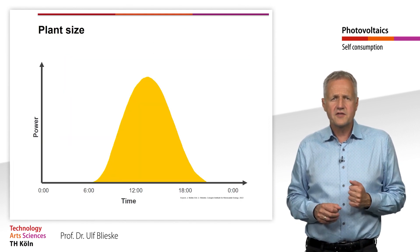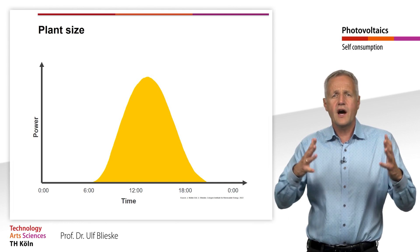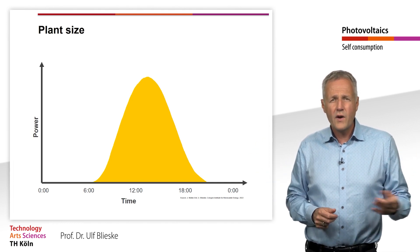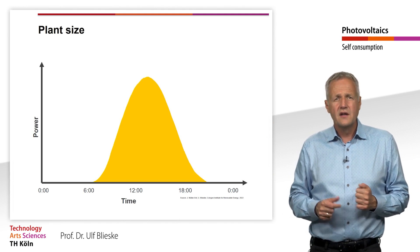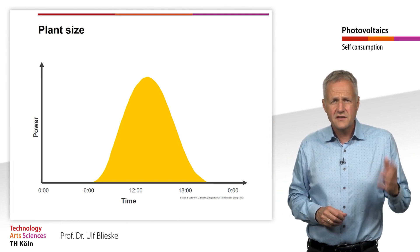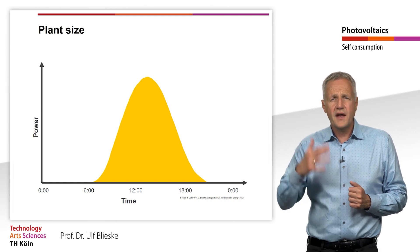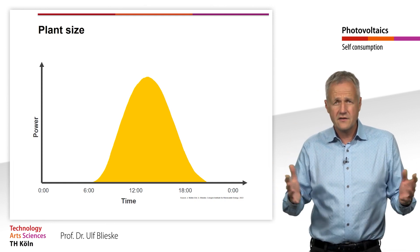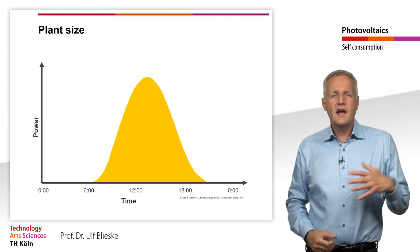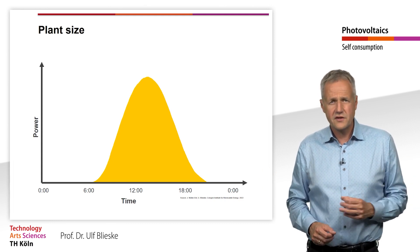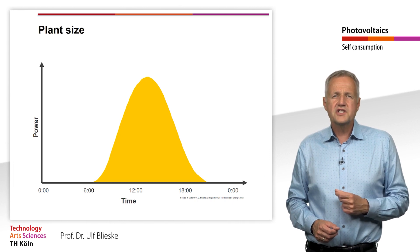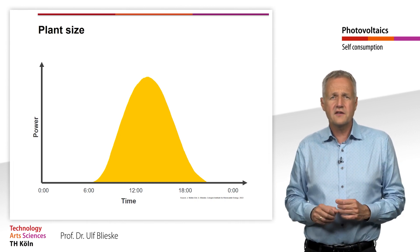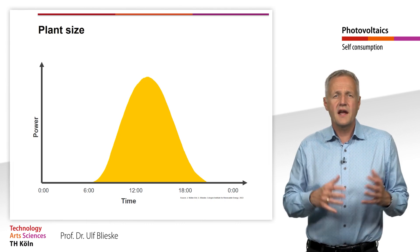The amount of self-consumption first of all depends on how large the PV production and electricity consumption are and how well they match in time. In general, the electricity consumption of a household depends on the type and the number of electrical devices, the number of people and the habits of the users. The solar energy generated, on the other hand, is determined by the power of the solar system, its location and the weather.